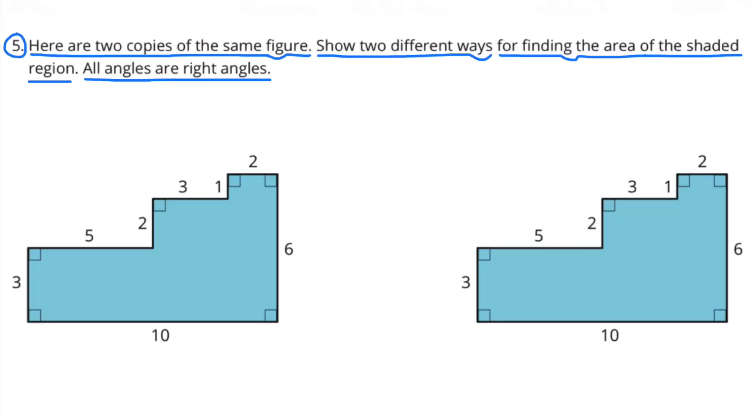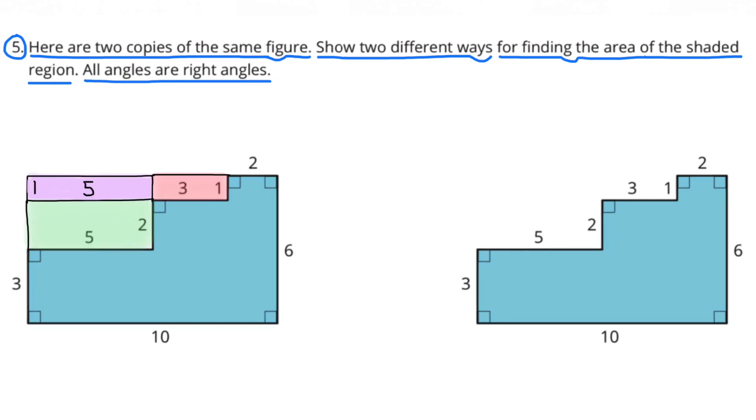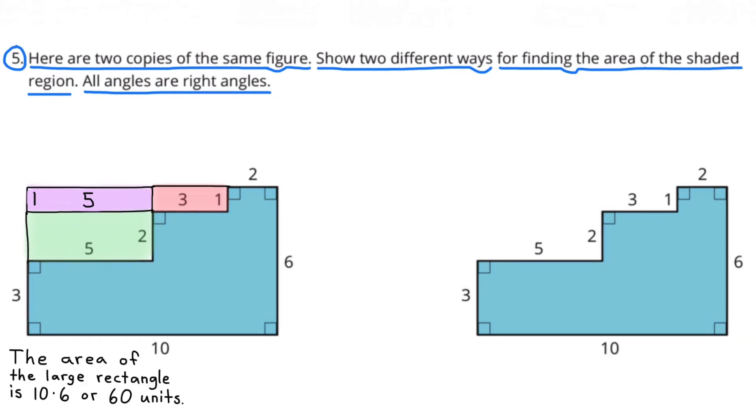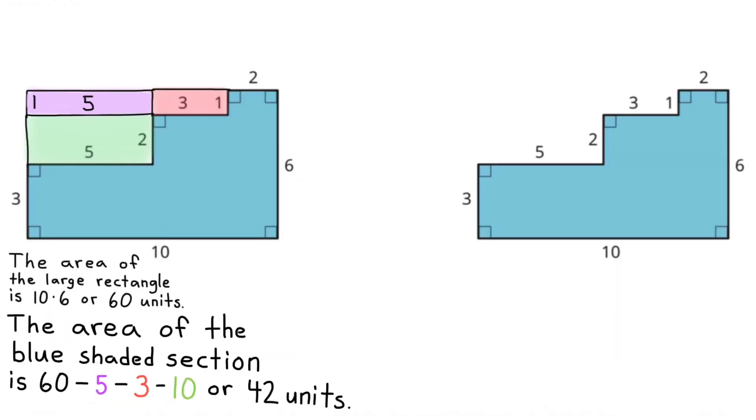Number 5. Here are two copies of the same figure. Show two different ways for finding the area of the shaded region. All angles are right angles. The area of the large rectangle is 10 times 6 or 60 units. The area of the blue shaded section is 60, minus 5, minus 3, minus 10 or 42 units.